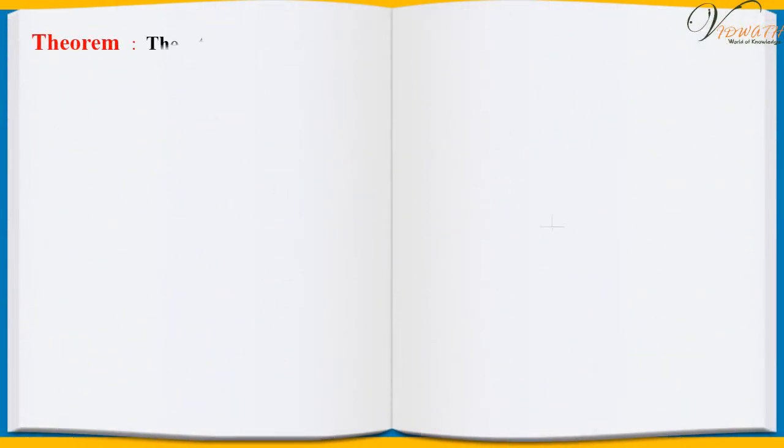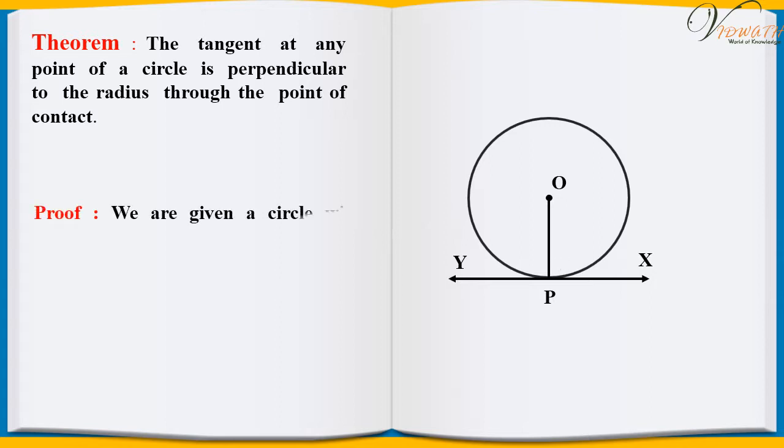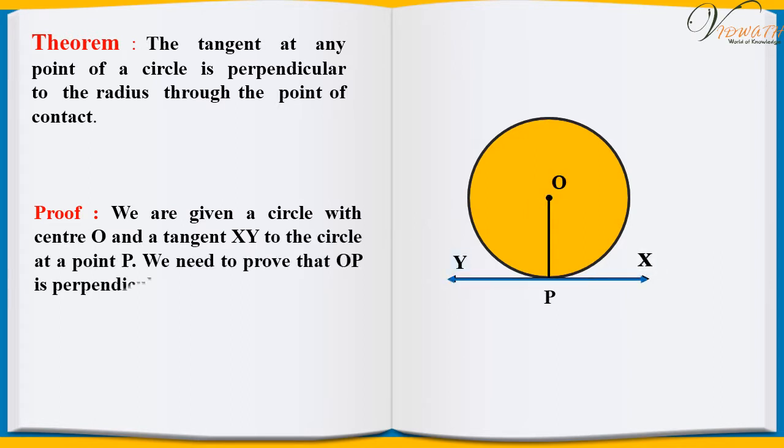Theorem: The tangent at any point of a circle is perpendicular to the radius through the point of contact. Proof: We are given a circle with center O and tangent XY to the circle at a point P. We need to prove that OP is perpendicular to XY.